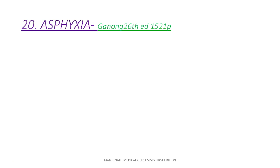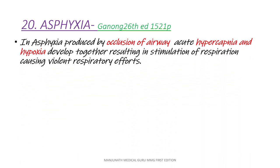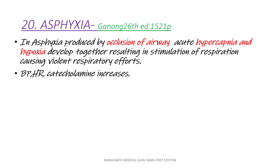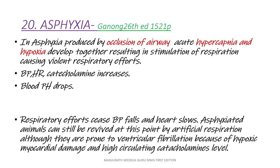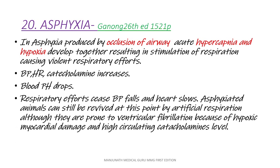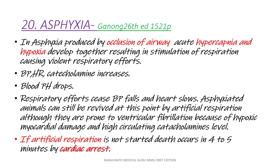Question number 20: Asphyxia. The answer is from Ganong 26th edition, page number 1521. In asphyxia produced by occlusion of the airway, acute hypercapnia and hypoxia develop together, resulting in stimulation of the respiratory center causing violent respiratory efforts. Blood pressure, heart rate, and catecholamines increase, whereas blood pH drops. Respiratory efforts cease, PO2 falls, and the heart slows eventually. Asphyxiated animals can still be revived at this point by artificial respiration, although they are prone to ventricular fibrillation due to hypoxic myocardial damage and high circulating catecholamine levels. If artificial respiration is not started, death occurs in 4 to 5 minutes by cardiac arrest.